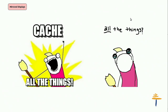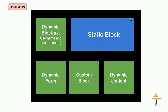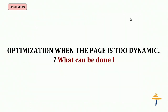Caching solves many things in Drupal 8 — it's a powerful weapon — but somewhere it fails. It fails when we have dynamic and static content on the same page. Handling static content with caching is very easy and makes your page really fast. But when we talk about dynamic content that is user-specific or changes very frequently — like a shopping site — the caching fails. How can you cache something that's really changing every now and then? So the question is: how can we optimize a very dynamic page?